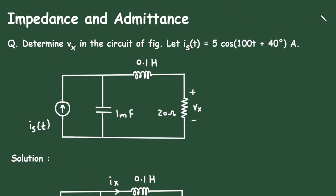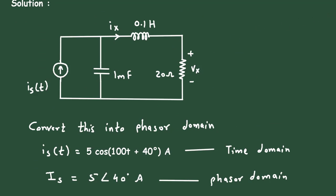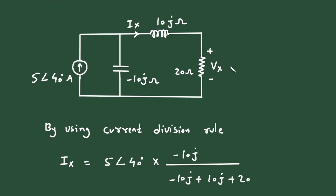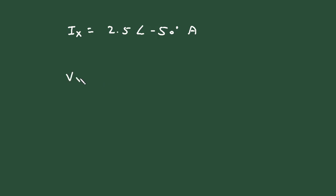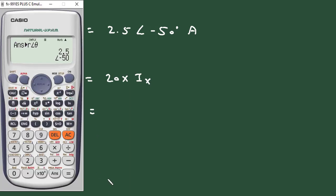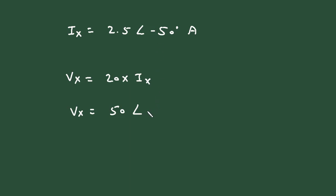But in this problem we have to find Vx. Vx equals current multiplied by resistance, so Vx = 20 × Ix. Therefore Vx = 20 × 2.5∠-50° = 50∠-50° volts.